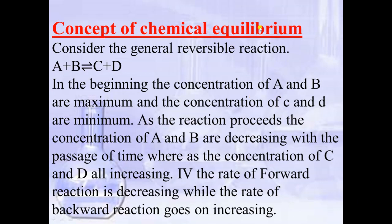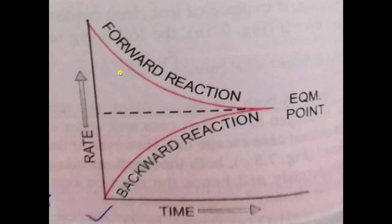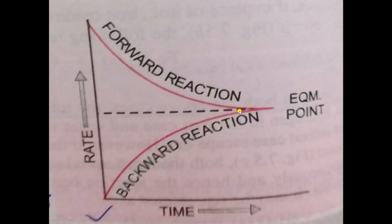Next is the concept of chemical equilibrium. Consider a reversible reaction where A and B react to give C and D, and C and D react to give back A and B. Initially, the concentration of A and B is maximum. With the passage of time, the concentration of reactants decreases as they convert into products, and the concentration of products increases. We can plot a graph of rate versus time: with the passage of time, the rate of the forward reaction decreases because the concentration of reactants A and B decreases.